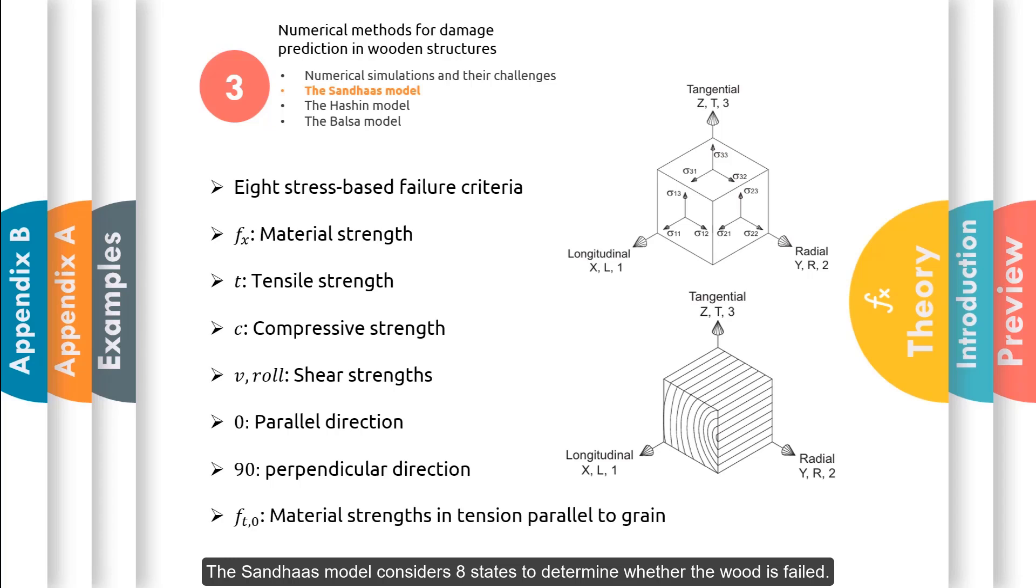The Sandhaus model considers eight states to determine whether the wood is failed. In this model, failure occurs when stress exceeds the material's strength. Therefore, material strength is needed as input data to check for failure.